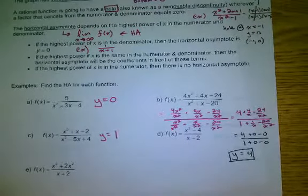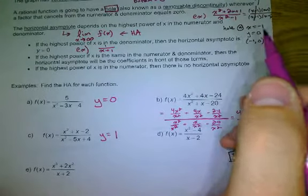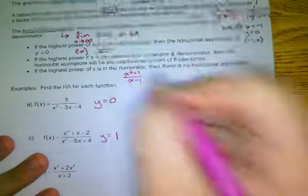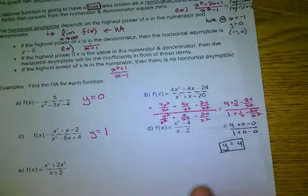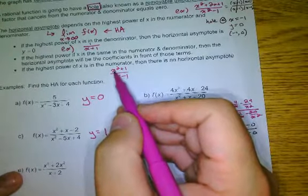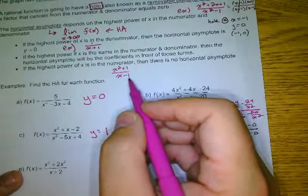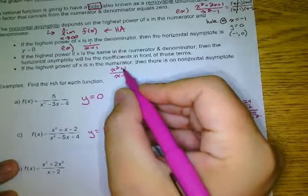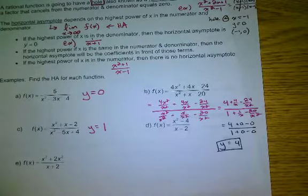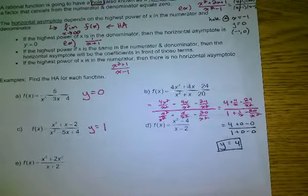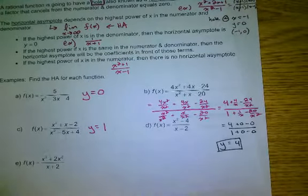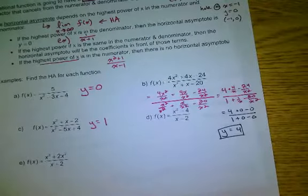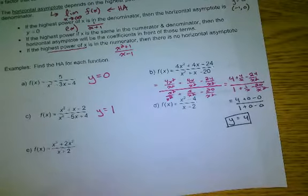Rule 3: if the highest power is in the numerator, there is no horizontal asymptote. Here's why: take x squared plus 1 over x minus 1. Plugging in a million, you get approximately a trillion over a million — a big number. Going bigger, it gets even bigger. The top grows faster than the bottom, so it goes to positive or negative infinity. It behaves like a polynomial — going up or down — so there's no horizontal asymptote.